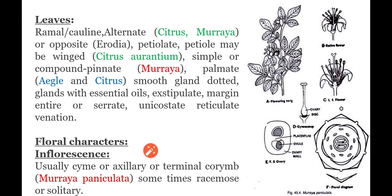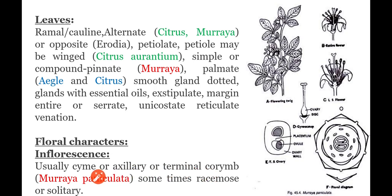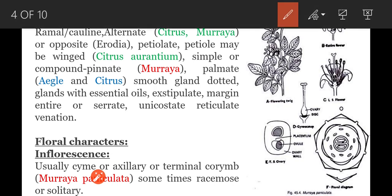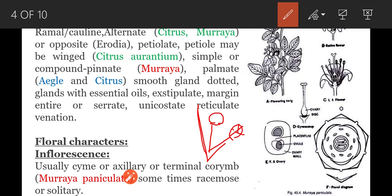Coming to floral characters, the first one is inflorescence. The mode of arrangement of flowers on the inflorescence axis is called inflorescence. In the Rutaceae family, inflorescence is usually cymose or corymbose. It may be axillary or terminal in position. In cymose inflorescence, the inflorescence axis shows definite growth and it is terminated with a flower. Axillary means it is developed between the leaf and stem.